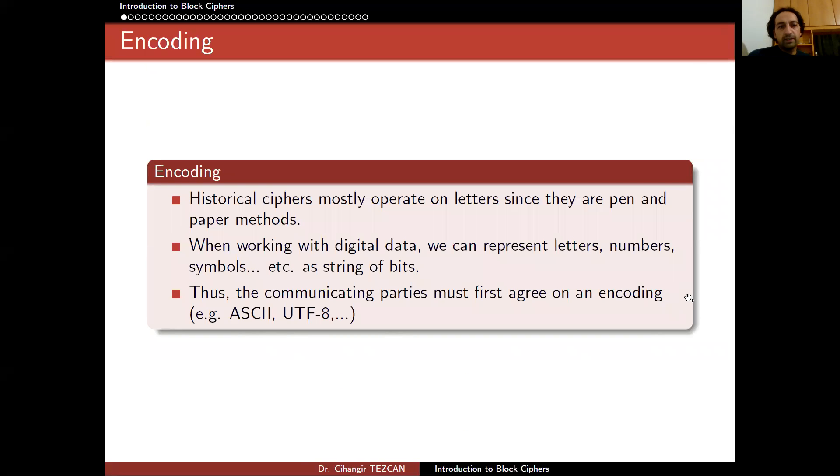So let's first talk about encoding. Historical ciphers mostly operate on letters since they are pen and paper methods. When working with digital data, we can represent letters, numbers, symbols, etc. as strings of bits. So we are actually representing the characters in terms of bytes in the digital world. Thus, the communicating parties must first agree on an encoding.